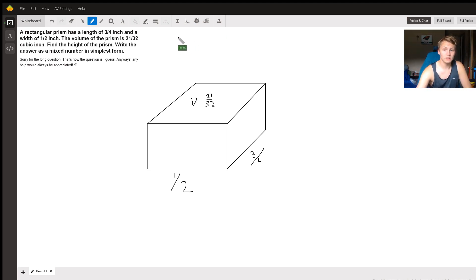And that's going to be all we need to solve this. So the formula for the volume of a prism is, I'll just write it out, it's length times width times height, and that should make sense.